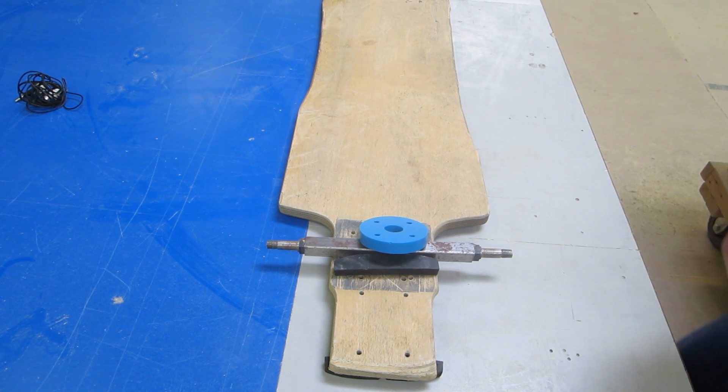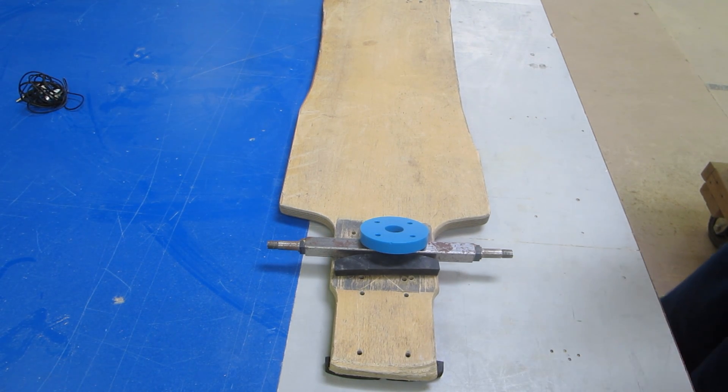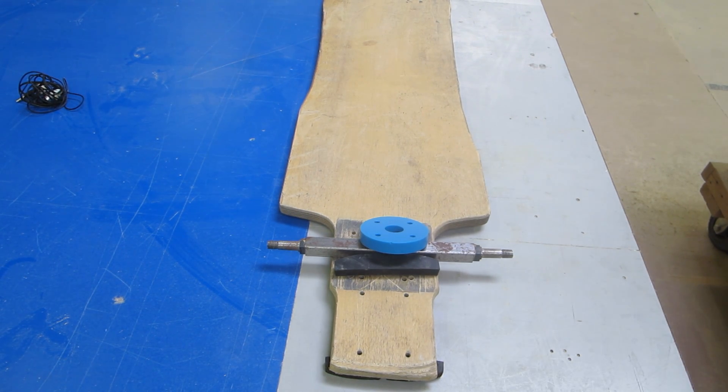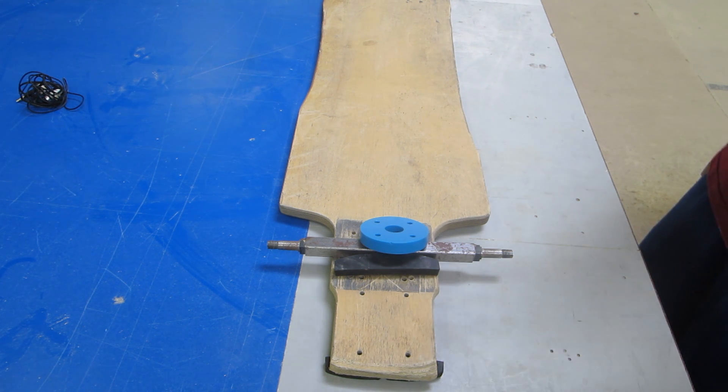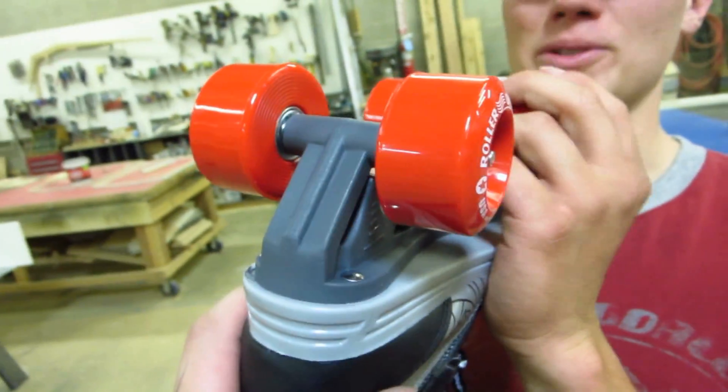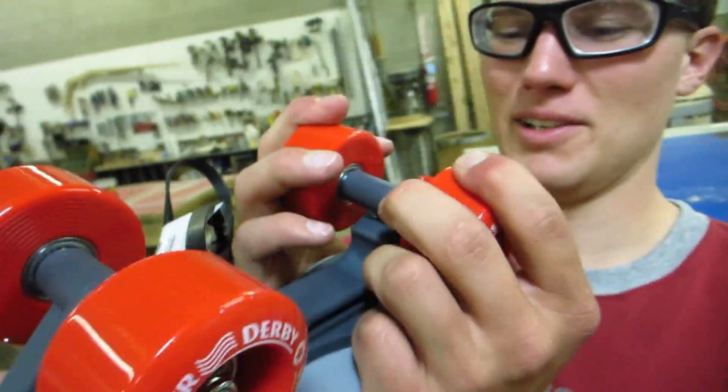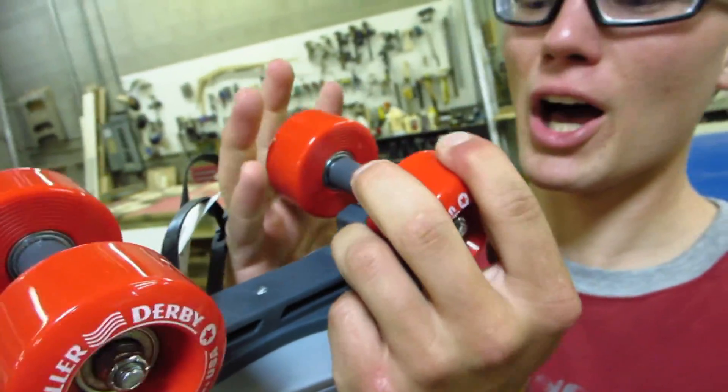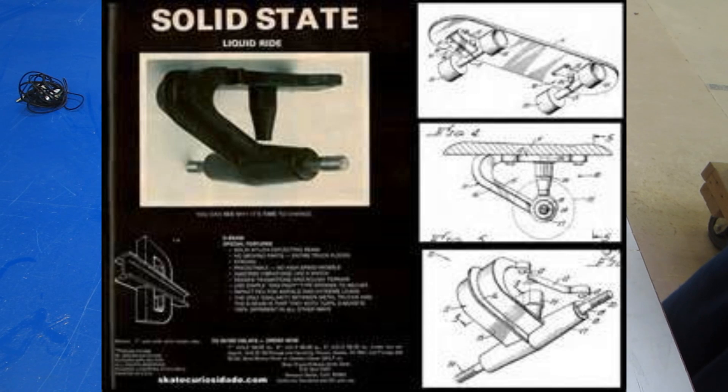This is taking inspiration from a torsion truck design. So not a torsion, a torsion beam design is what I'll call it. There's this type of torsion truck called a torsion beam design. If you look at our roller derby video, we take a look at one of those that was made for roller skates. But then we also realized that there's actually a big history of these torsion trucks in longboarding and in skateboarding.